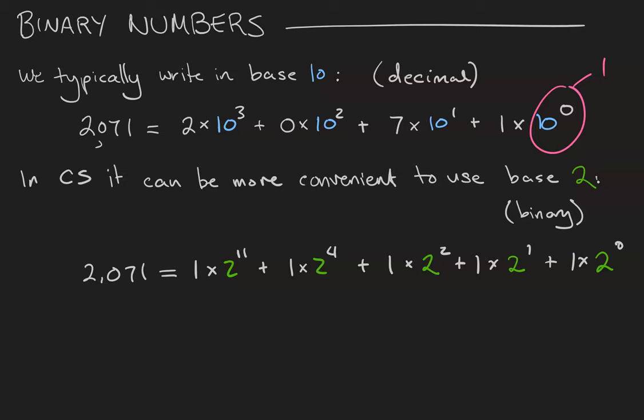And the way you would write that number down is 1, 0 for the 10, 0 for the 9, 0 for the 8, 0 for the 7, 6, 5, and then a 1 for the 2 to the 4 spot, a 0 for the 2 to the 3rd spot, a 1 for the 2 squared spot, a 1 for the 2 spot, and a 1 for the 1 spot. And then, so that I don't confuse this with a very large base 10 number, I wrap it in this sub 2 notation.